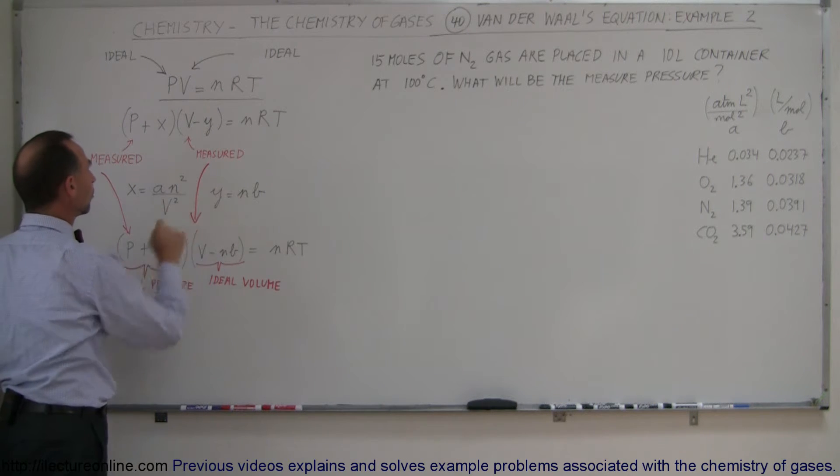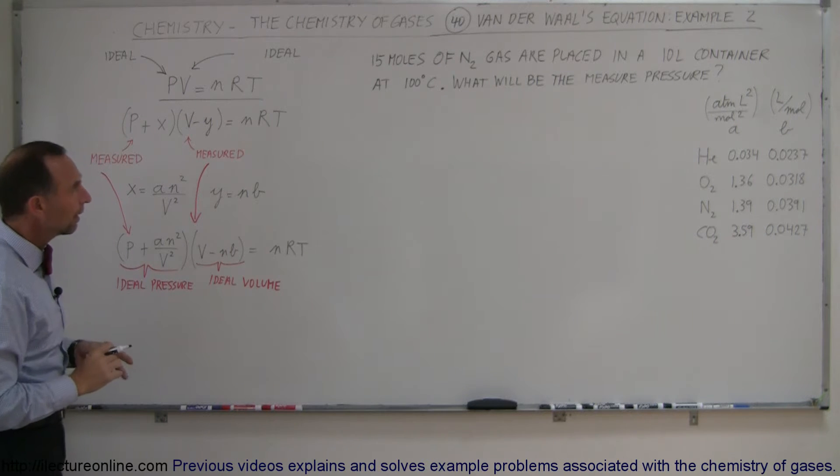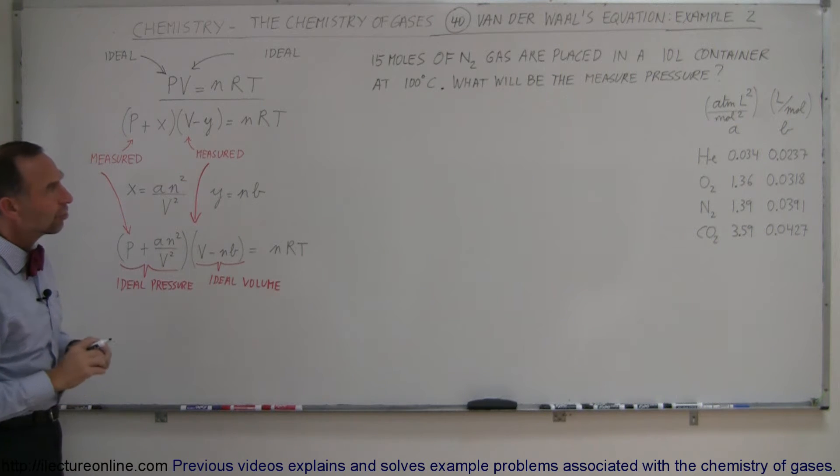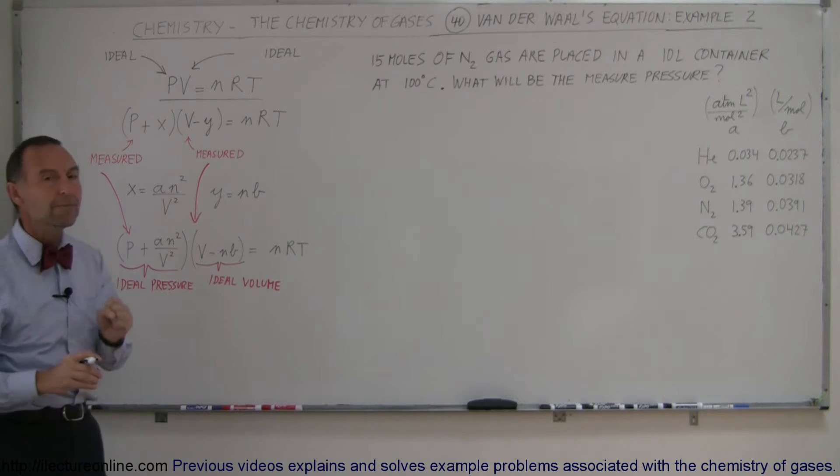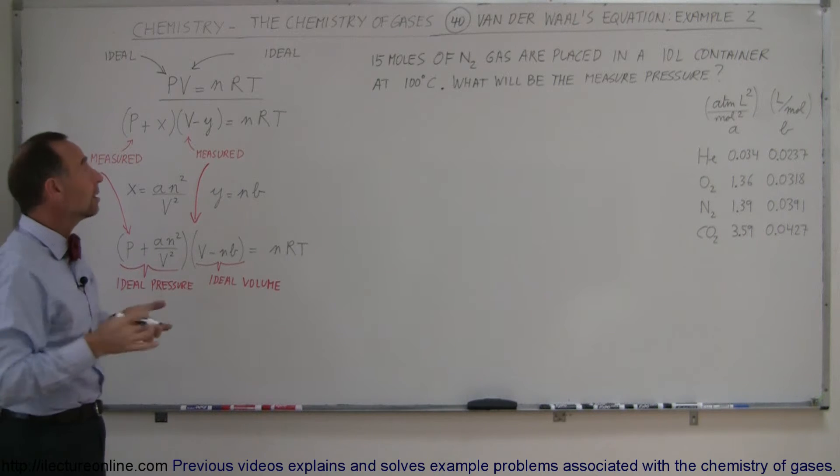N is the number of moles of the gas, and V is the volume of the container. So, let's say we have 15 moles of nitrogen gas placed in a 10-liter container at 100 degrees centigrade. What will be the measured pressure? Now, let's calculate first the ideal pressure.